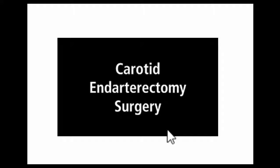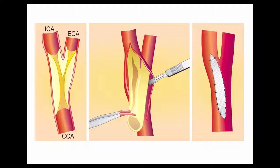What are the treatment options for patients with carotid artery disease? There are two major types of treatment available. The first is carotid endarterectomy surgery, which has been around for 30 to 40 years with excellent results documented in the literature. The more recent option is carotid stenting. Here is a diagrammatic representation of how carotid endarterectomy is performed.